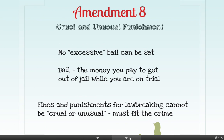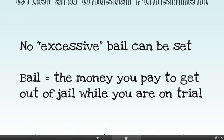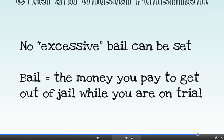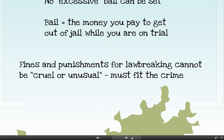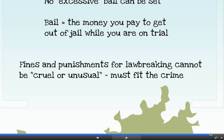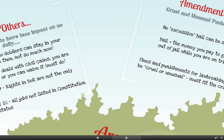In Amendment 8, it talks about cruel and unusual punishment. Basically, no excessive bail can be set — if you get arrested and want to get out of jail before your trial, you can post bail, and they can't make that bail unreasonably high. Secondly, there are no cruel or unusual punishments allowed. The punishment must fit the crime. What 'cruel and unusual' means varies depending on who you ask and what the Supreme Court says.